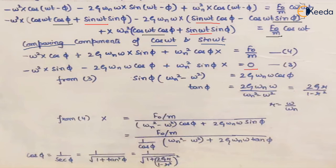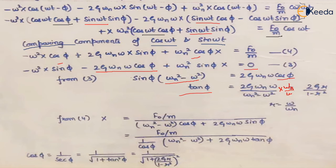From the sin(ωt) equation, rearranging gives tan(φ) = 2ζω_nω / (ω_n² − ω²). Multiplying and dividing by ω_n², this becomes tan(φ) = 2ζR / (1 − R²), where R = ω/ω_n is the frequency ratio.